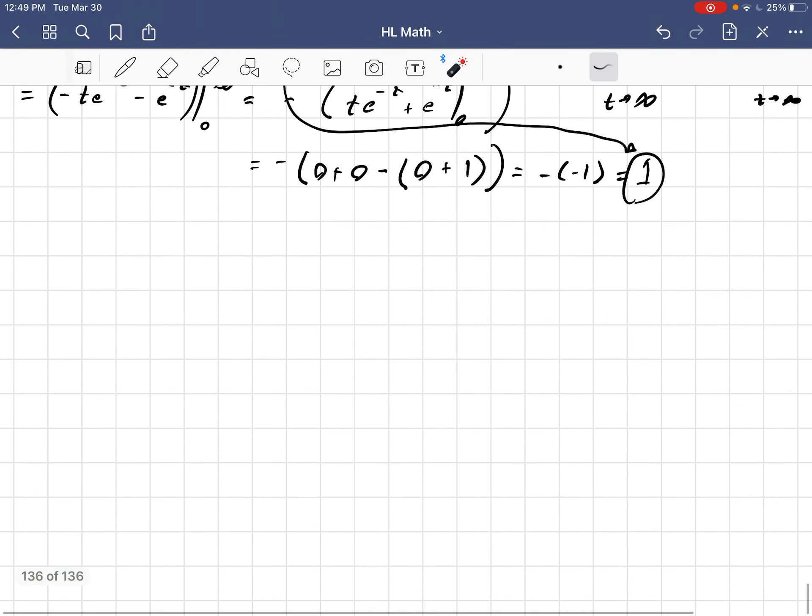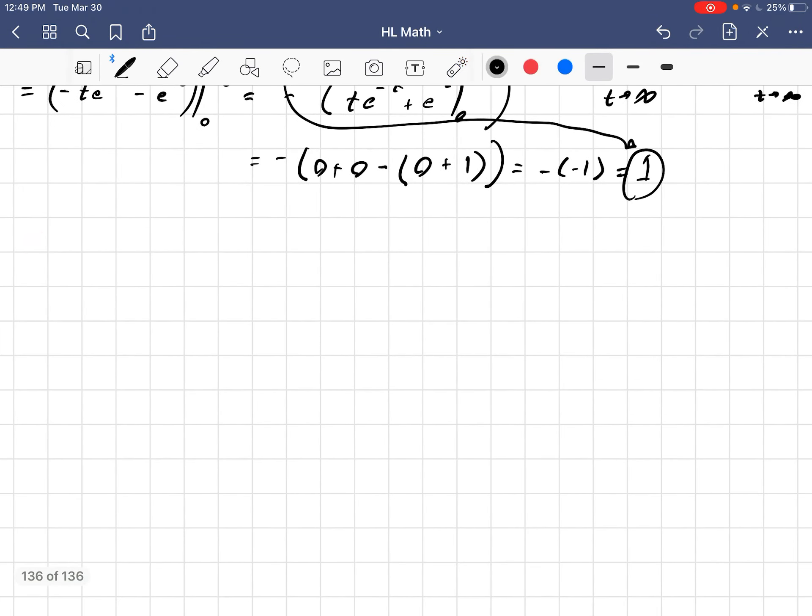So, i factorial, by definition of the gamma function, would be the integral from 0 to infinity of t to the i, e to the negative t, dt. And, realize that t to the i, I want to change t to e. I want to base e so that I can combine these. t to the i is really e to the natural log of t to the i, because t is e to the natural log of t, which is e to the i ln t.